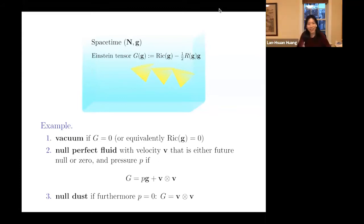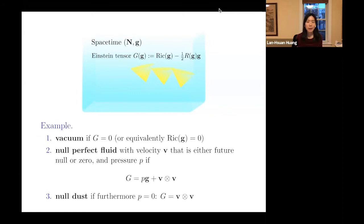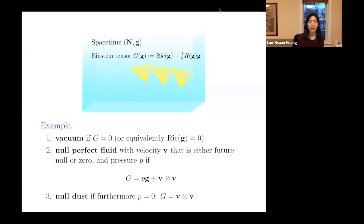We'll talk about spacetime, and the spacetime will satisfy the Einstein equation. The Einstein equation is the equation on the Einstein tensor, which is defined to be the Ricci minus half of the scalar curvature times G. Here G is a Lorentzian metric. We'll talk about the vacuum case — the vacuum case is when the Einstein tensor is zero — and we'll also touch upon no-perfect fluid spacetime, which mathematically says the Einstein tensor has a special form determined purely by a function p and the velocity v.